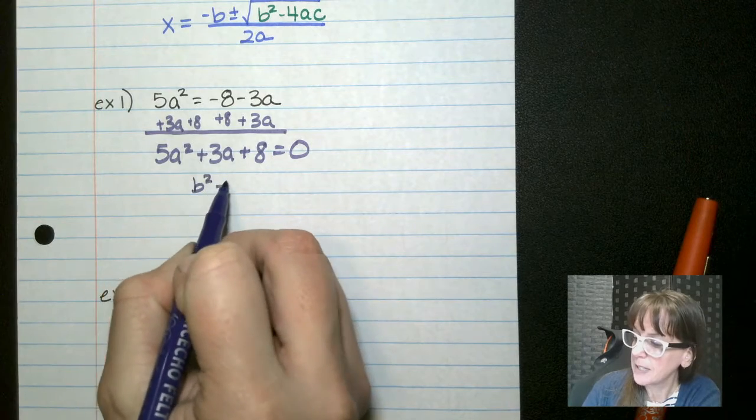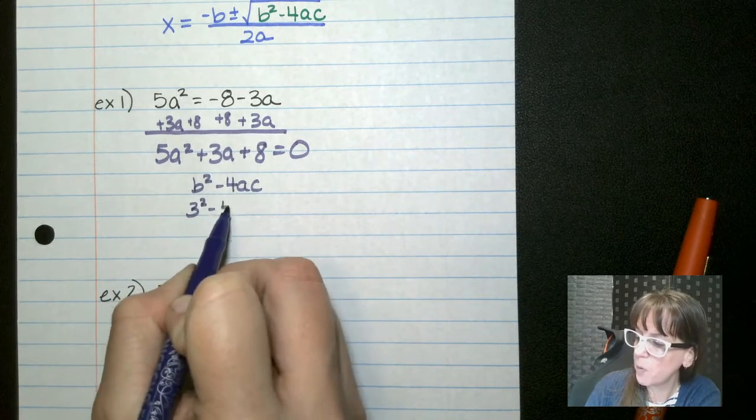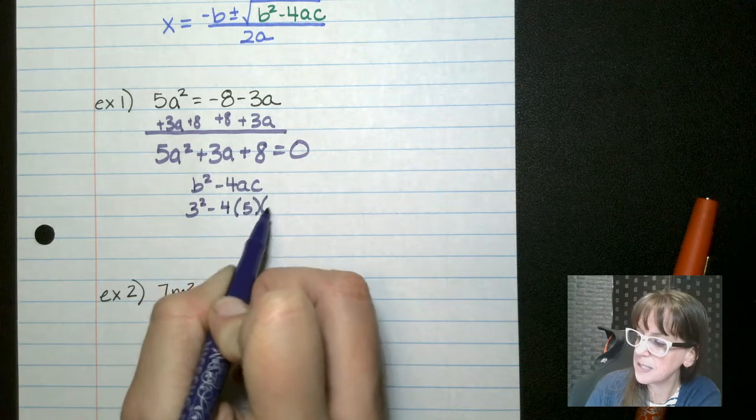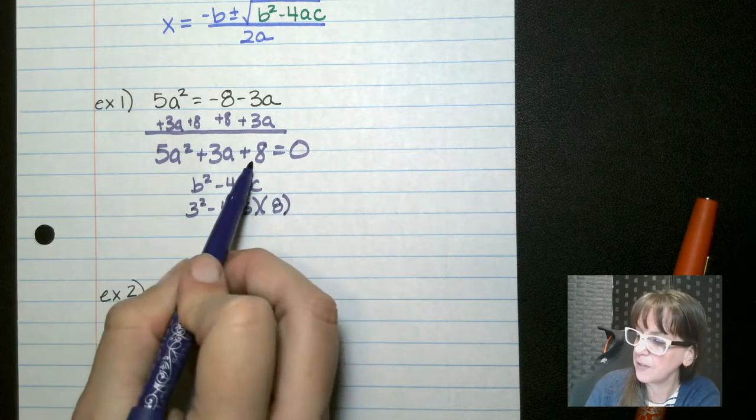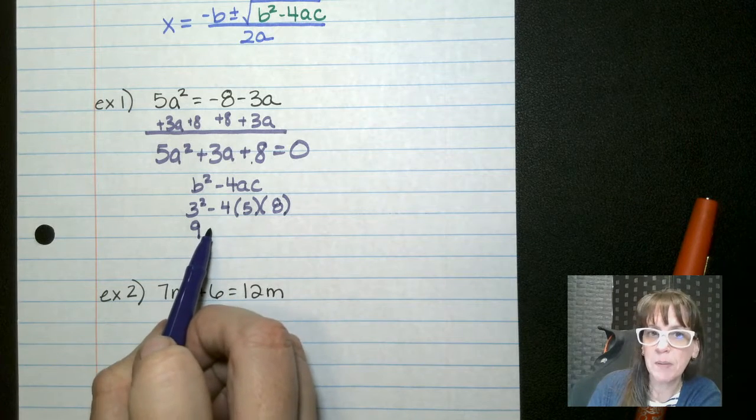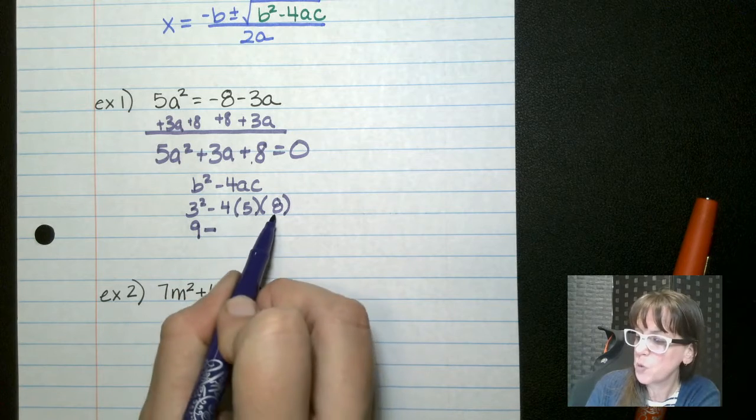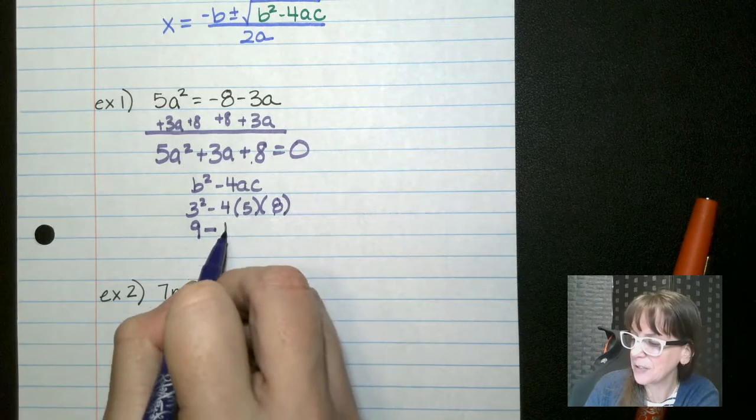b squared minus 4ac. So we take our b, so 3 squared minus 4 times a times c. So our a is 5, our c is 8. That gives me 9. And then I'm allowed to just bring down my minus because there's no other negative. So minus 4 times 5 is 20 times 8 is 160.